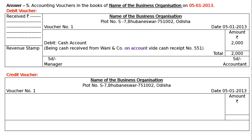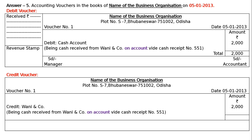Write the amount with rupee symbol. The credit entry: the giver here is Wahee and Company — credit the giver. According to the traditional method, Wahee and Company was our debtor; they gave us money. According to the modern method, they were our asset and that asset decreased — decrease in asset is credited. Credit Wahee and Company account, amount 2000. Narration: 'Being cash received from Wahee and Company on account, vide cash receipt number 551.' Total: rupees 2000. SD Manager on the left, SD Accountant on the right.